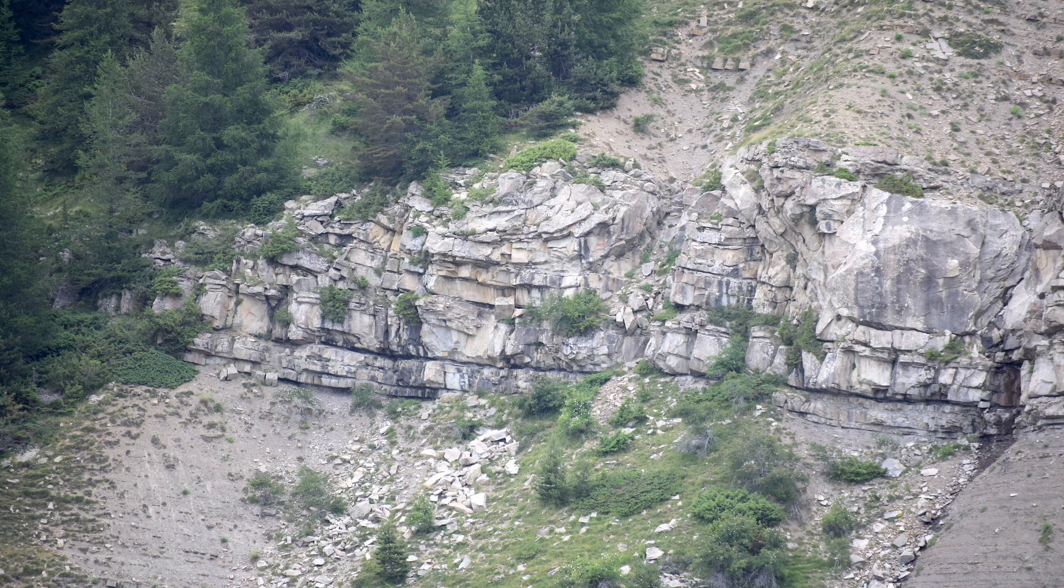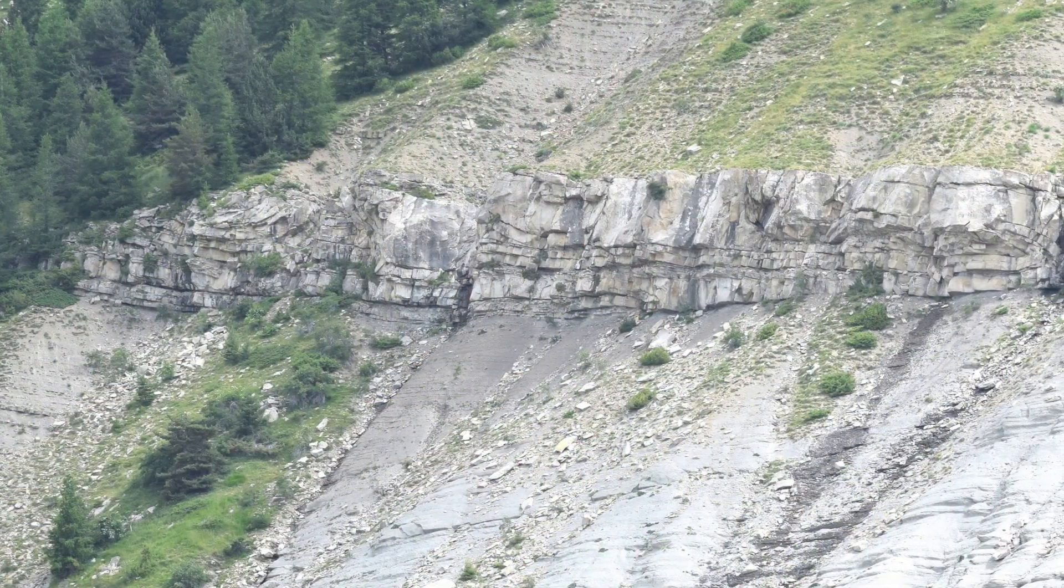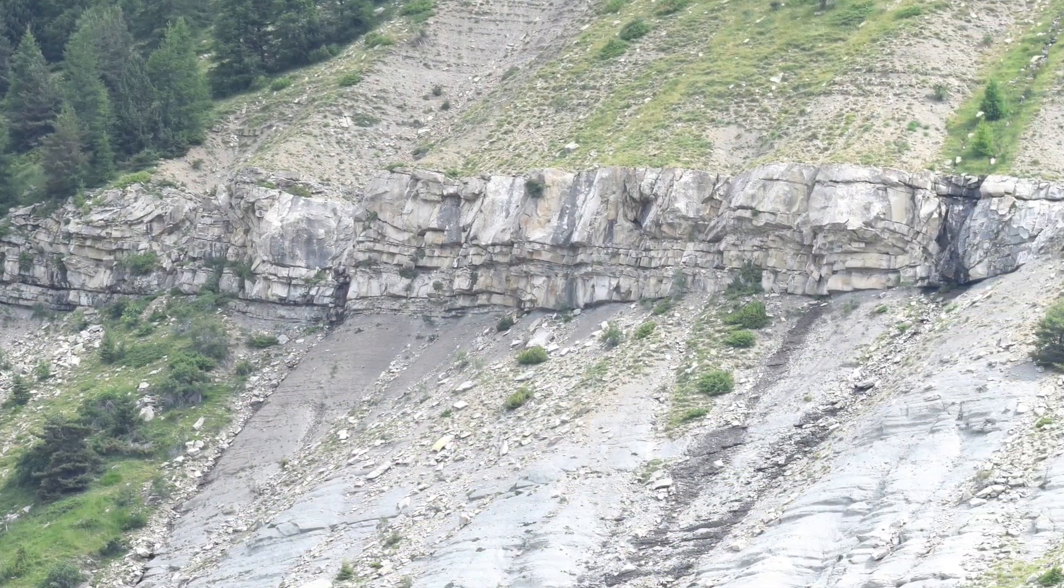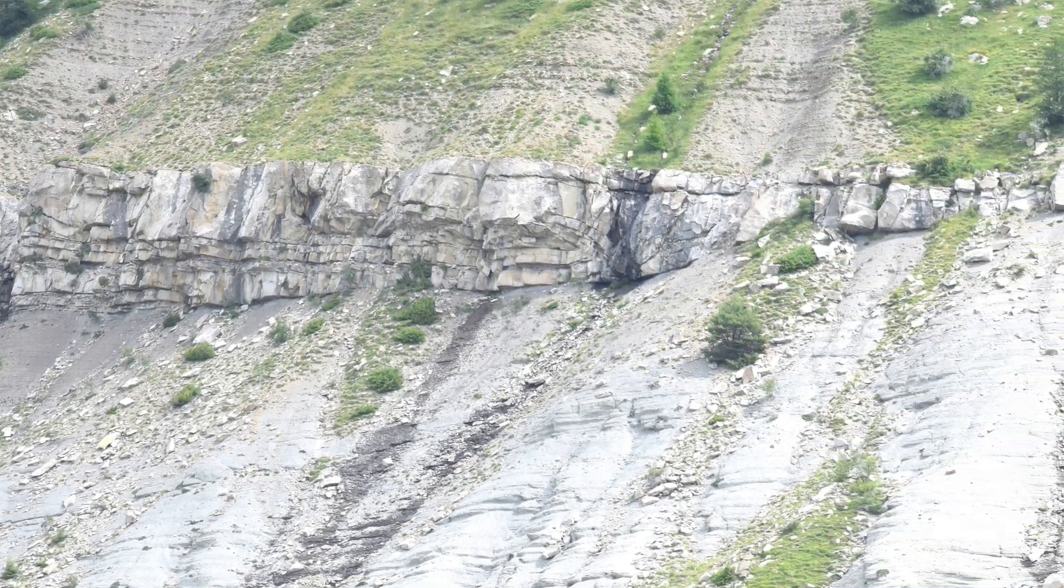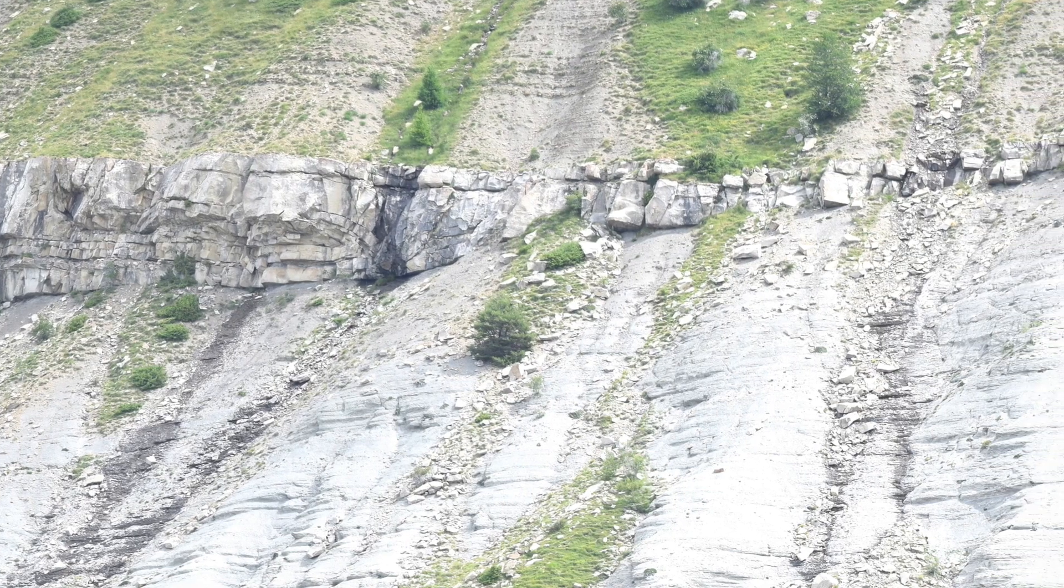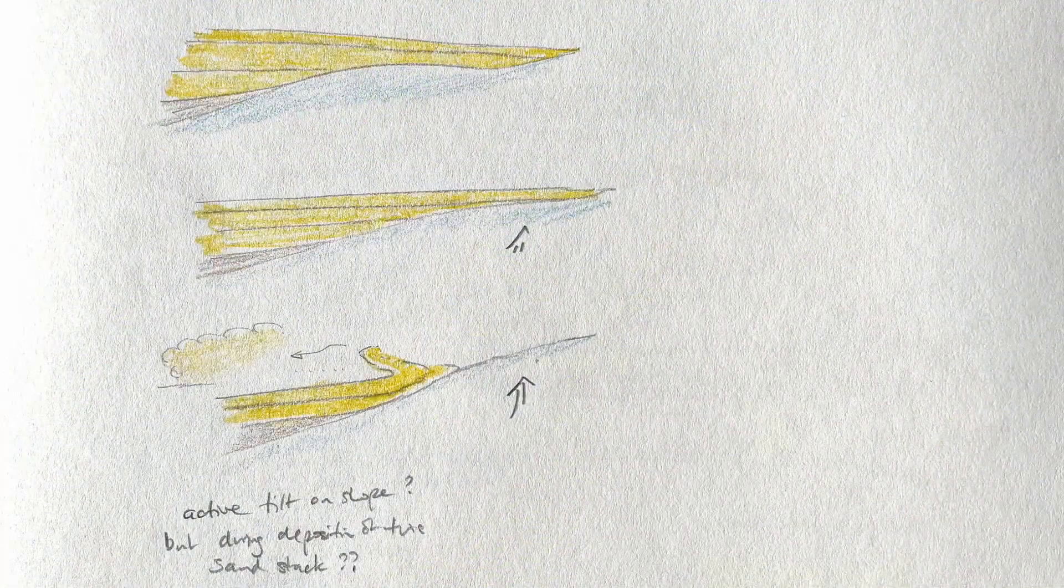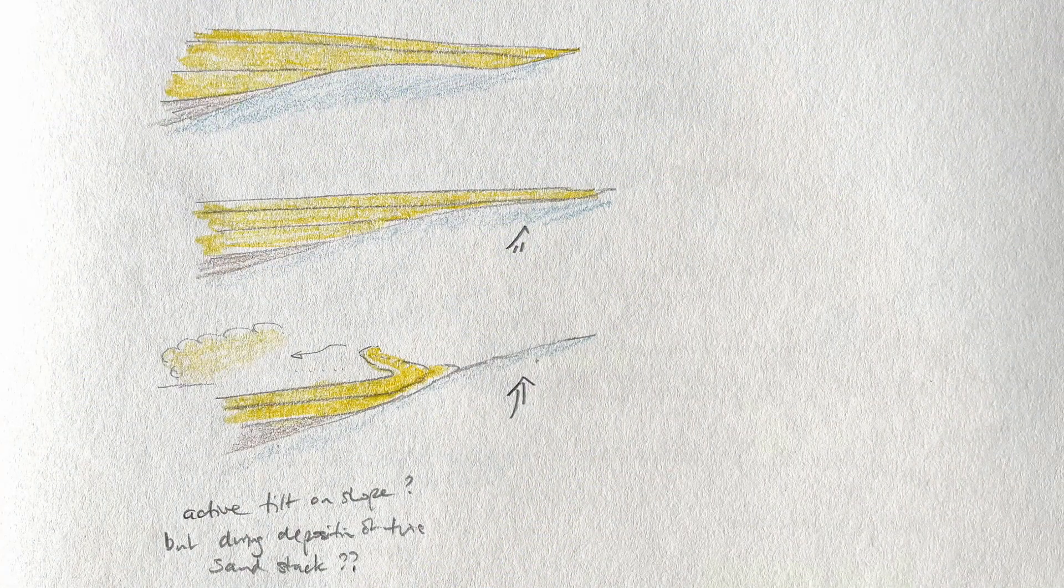So presumably there was erosion of the slumped and dismembered sandstone package before the deposition of the top units. This slumping presumably was down the onlap surface. Beds down slope and disintegrating as they go.